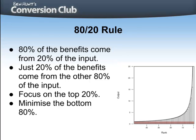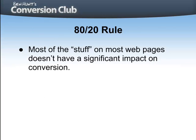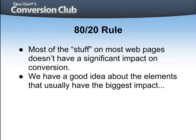What this is telling us — and I believe this is absolutely true — is that most of the stuff on most web pages doesn't have a significant impact on conversion. You might say that 80% of the things you might change are unlikely to have much impact on conversion. However, 20% of the stuff on a web page, or 20% of the things you might change, will have a very significant impact on conversion. The trick is to know which is which. From the research I've been doing and the course called Ultimate Web Design, we do have a pretty good idea about which elements usually have the biggest impact — and I'll tell you what those are in a second.